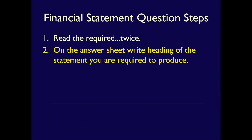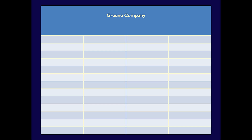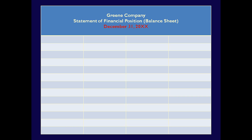Step 2: On your answer sheet, write down the heading of the statement you're required to produce, including the name of the company, the title of the financial statement, and the required dating. The dating would be either a point in time or a period of time, depending on the statement you have to produce. By doing this, you help focus your attention on exactly what the required really means, and that helps to guide you as you move forward.